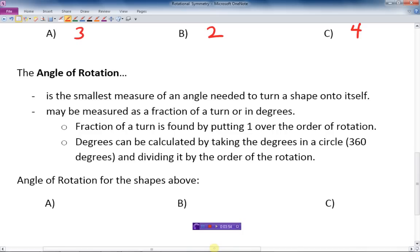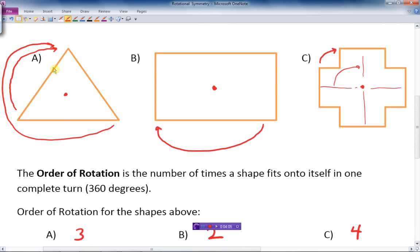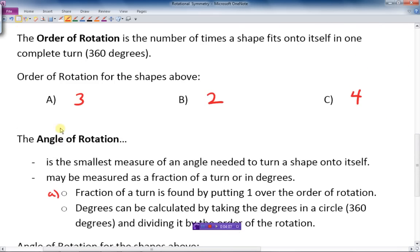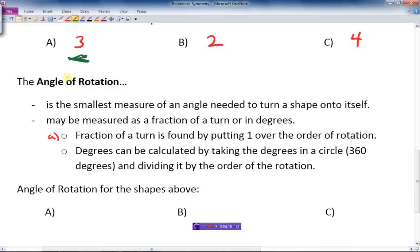The fraction of the turn, so let's just look at A here. A fraction of a turn is found by putting one over the order of rotation. Well, for A here, for the triangle, the order of rotation was three. So when I put one over that, that would be one-third of a rotation would give us the same shape again.